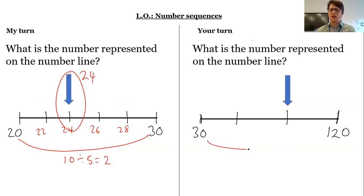So again, same principle here. The first step is to work out what's the difference between 30 and 120. Then how many parts are there? So what am I dividing by? What is each step then? So what is the value of the arrow? So pause the video now, have a go and come back once you're done.